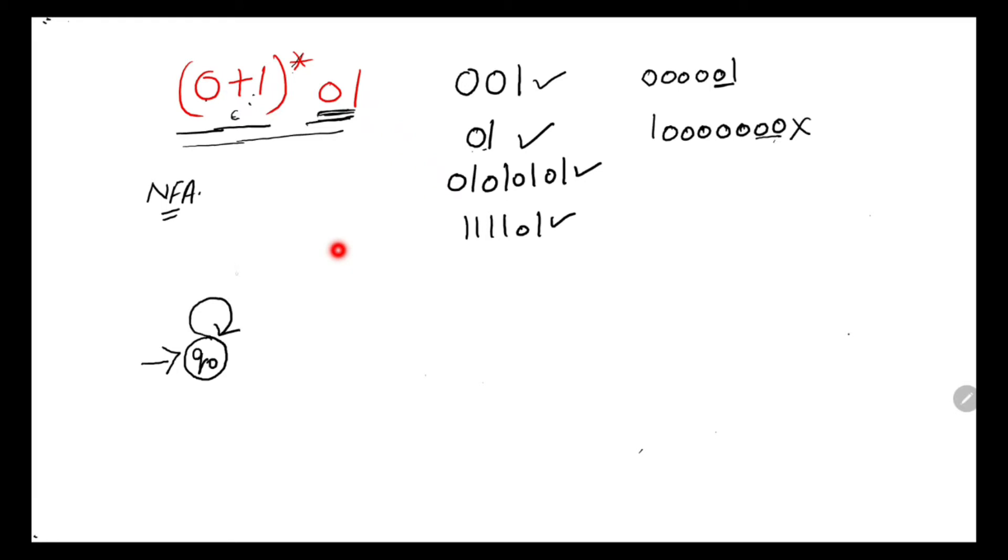This is the easiest way: that is (0,1)*. That means any combination of 0s and 1 can be found by this particular string as we are doing it on the initial state. So epsilon will also be fine, can also be considered.